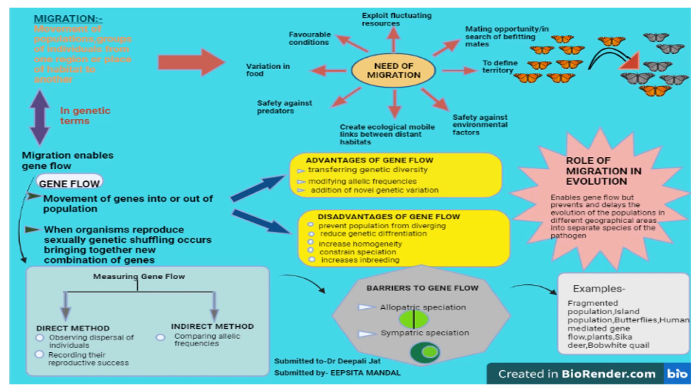When organisms reproduce sexually, genetic shuffling occurs between them, bringing together new combinations of genes. Gene flow includes many different kinds of events such as pollen being blown to a new destination, or people moving to new cities or countries. If gene versions are carried to a population where those gene versions previously did not exist, gene flow can be a very important source of genetic variation. Migrants change the distribution of genetic diversity among populations by modifying allelic frequencies.